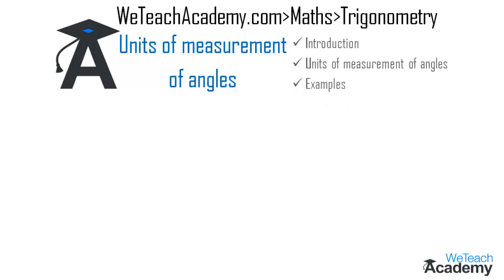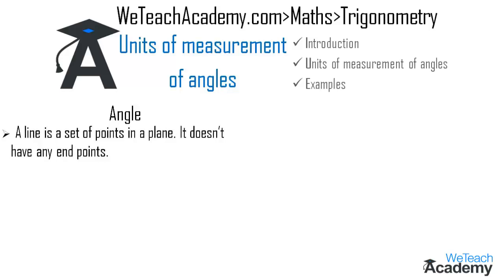Coming to the first part, let us learn what is an angle — starting with what is a line. A line is a set of points in a plane and it doesn't have any endpoints. As you can see here, a line has no endpoints and can be extended from both sides. We name this line as AB, represented symbolically as line AB.